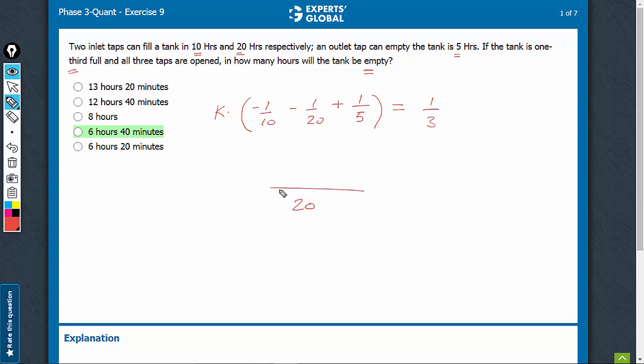20 is the LCM. Minus 2 minus 1 plus 4, k into this is equal to 1 by 3, and k is equal to, therefore, 20 upon 3. 20 upon 3 means 6 hours and 40 minutes. That's the right answer.